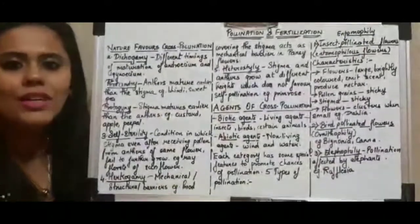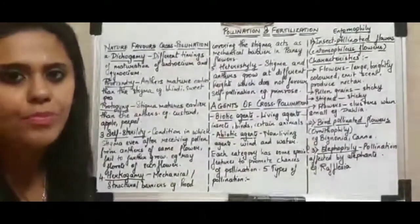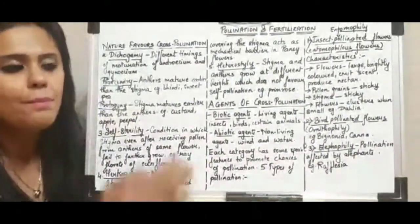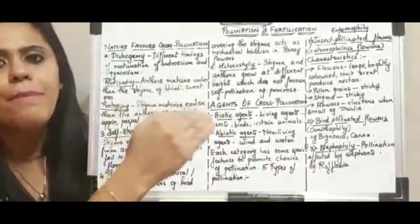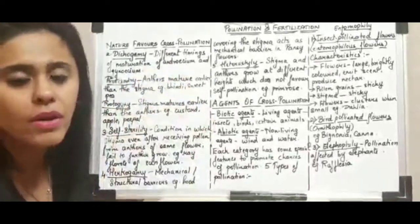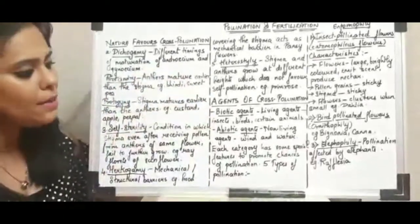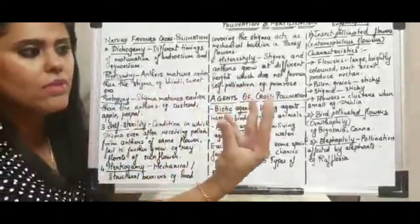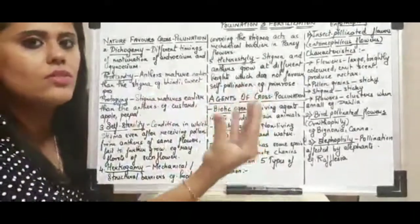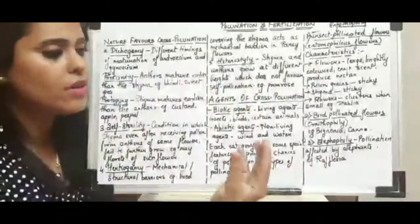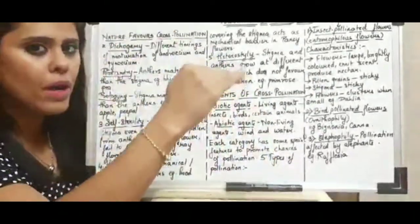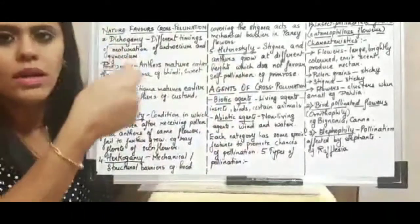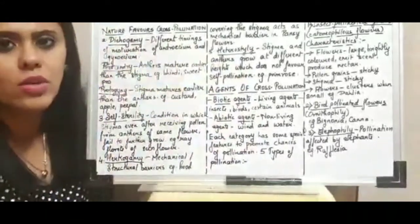The next condition is herkogamy. Herkogamy means there is a mechanical barrier. In the flower structure, there is a hood-like structure over the stigma.